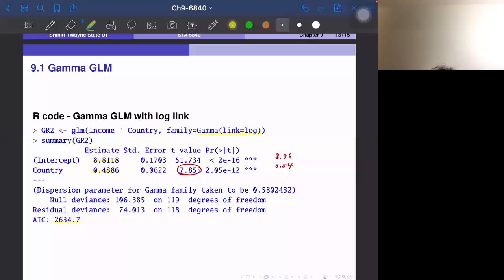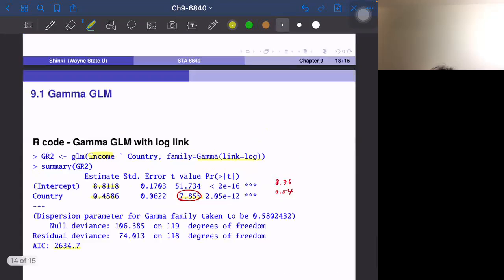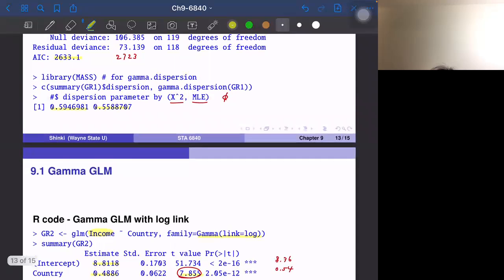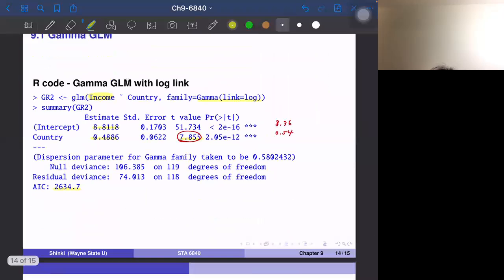So even though this is log scale, still the response variable is income itself. So we can compare, for example, AIC. And actually this one, a little more significant the coefficient for country. And we don't really know the reason. So this is just sample data with a small sample size. So anything can happen. Okay. So even simulated data. But the AIC is actually better for the previous one. So it's kind of consistent, but it's very similar.